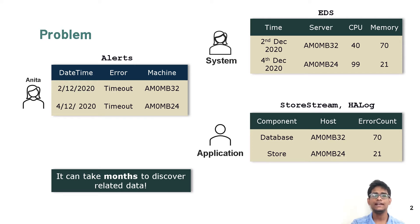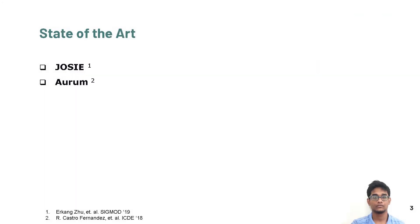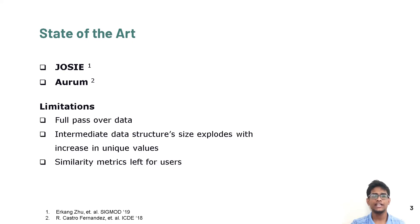Thus, we built Data Lake Navigator, a large scale data discovery system for data lakes that store exabytes of data in billions of data streams. Among the previous work targeting this problem, Josie and Aurum are two state-of-the-art techniques. However, they require a full pass over the data which is not feasible for large data lakes containing exabytes of data. Josie requires an intermediate data structure whose size explodes with an increase in number of unique values in the data sets.